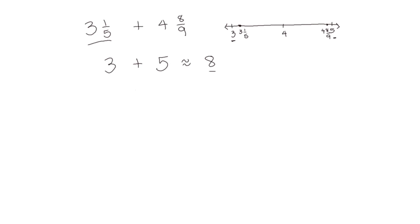Let's look at the same two numbers but this time calculating a difference. We could use the same estimates — 5 take away 3 — so the estimate of our difference would be 2. Estimates are helpful in checking our exact calculations to make sure they're reasonable. If we did an addition and found a sum of about 8, we could be pretty confident our answer was correct. If we found a difference of about 2, we could again be pretty confident in our calculations.